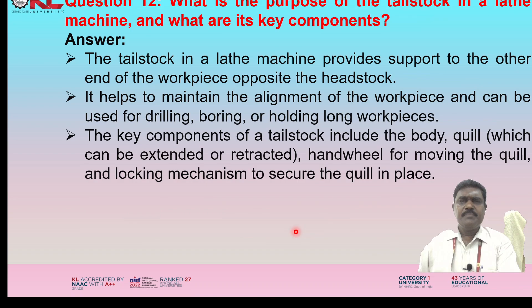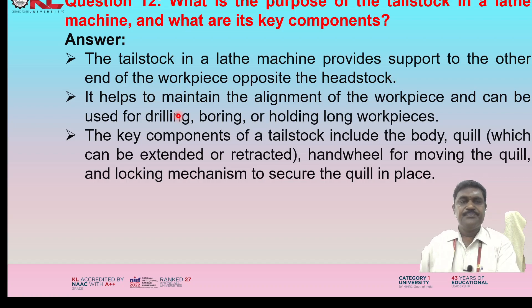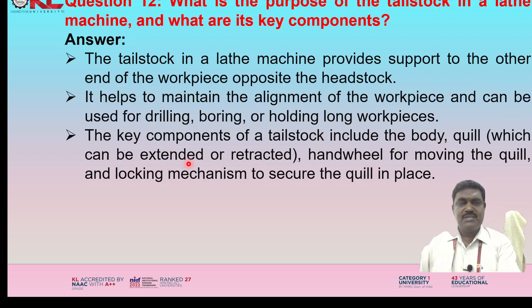What is the purpose of the tailstock in a lathe machine and what are its key components? The tailstock provides support to the other end of the workpiece, opposite the headstock. It helps maintain the alignment of the workpiece and can be used for drilling, boring, or holding long workpieces. Key components of the tailstock include the body, quill (which can be extended or retracted), handwheel for moving the quill, and a locking mechanism to secure the quill in place.